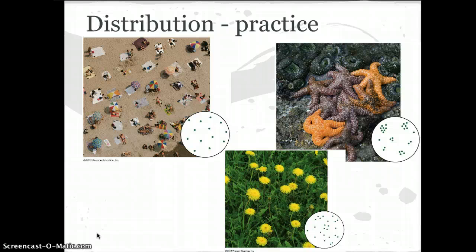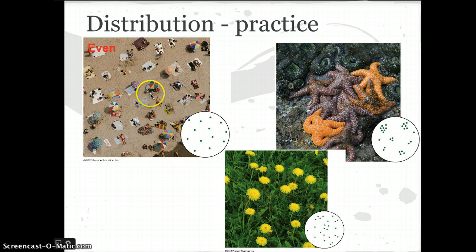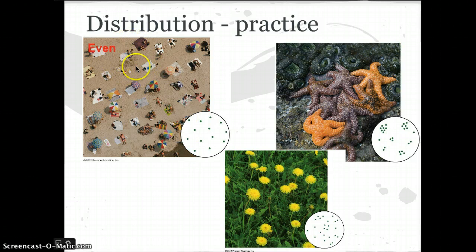Hopefully you had a chance to identify that the first one is random distribution. This is interesting because I just told you humans are often considered clumped — but in this beach picture, it's more of an even distribution, because everyone wants a little bit of sun. Nobody wants another person's umbrella shading them or a radio playing too loudly nearby. So people on the beach represent an even distribution pattern. Trees or plants that produce toxins in the ground also show even distribution because they change the soil so nothing else can grow nearby.